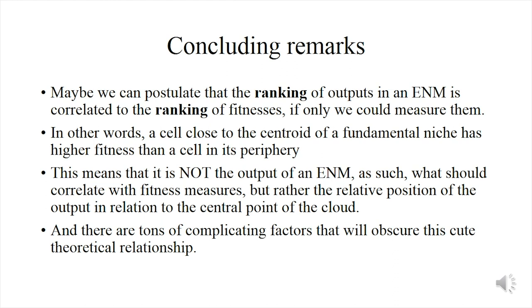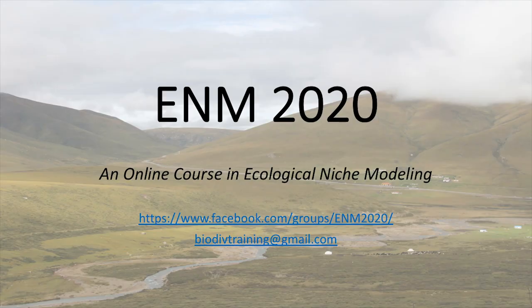To conclude, maybe we can postulate that the ranking of outputs in an ecological niche model is correlated to the ranking of fitnesses — and that is not an absurd idea; theory supports it. The output of an ENM as such doesn't directly correlate with fitness; it's just the distance to the centroid. There are many complicating factors that may hinder or obscure this theoretical relationship: movements, Allee effects, habitat limitations, presence of competitors, and so on. But it is very interesting that at least theoretically we should expect such a relationship, and when you use the right kind of data and the right kind of species, the prediction is supported. Thank you.